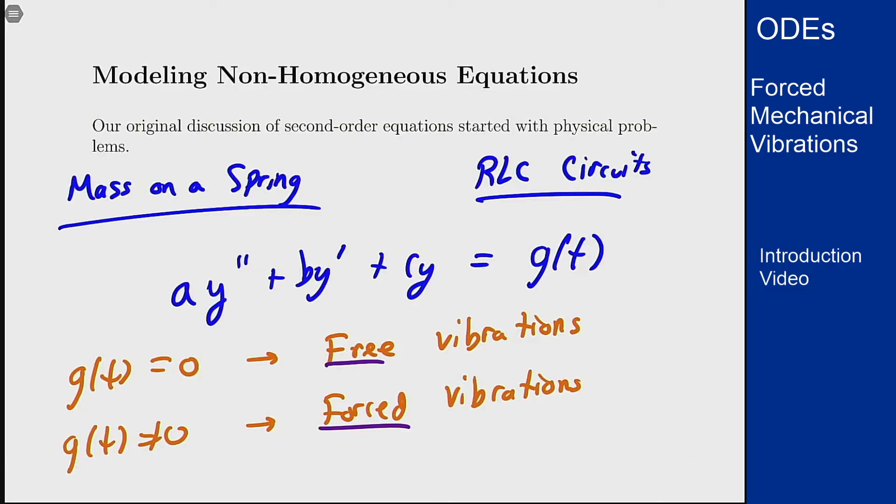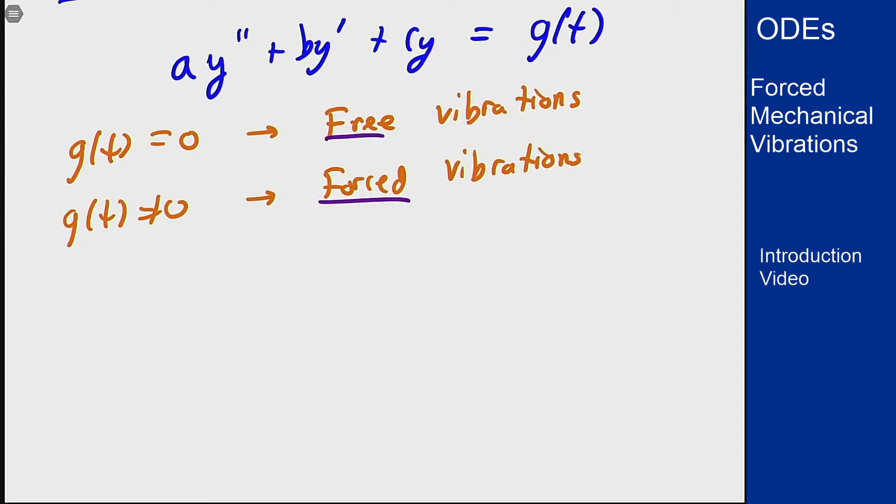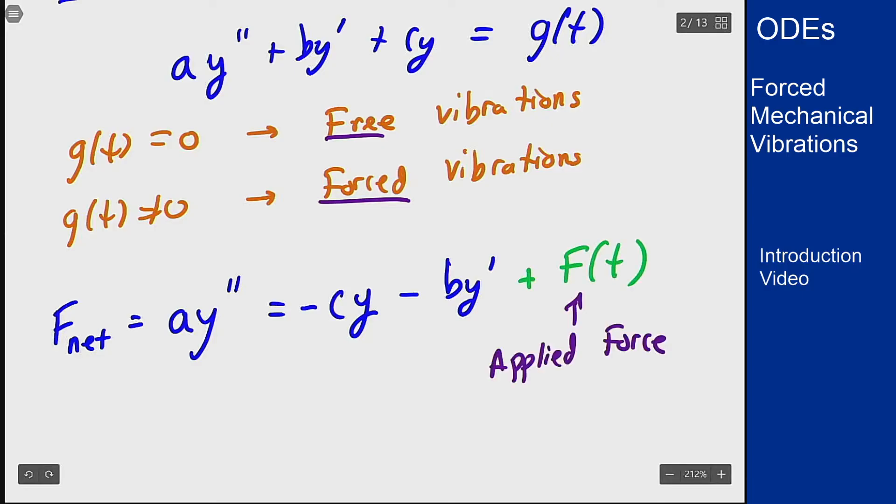The mass on a spring equation really comes down to a force equation. It's saying that the net force, which is mass (the a term) times acceleration (which is y''), equals the other side, which is the two different forces: -cy (our spring constant or Hooke's law constant) minus by' (our drag coefficient), and then we may also have some extra applied force to the system. That becomes our g(t) on the right-hand side of the equation, because that is some extra term that's only dependent on time. This f(t) will turn into our g(t), which is our non-homogeneous term on the right-hand side, and that gives us our forced vibration equation.